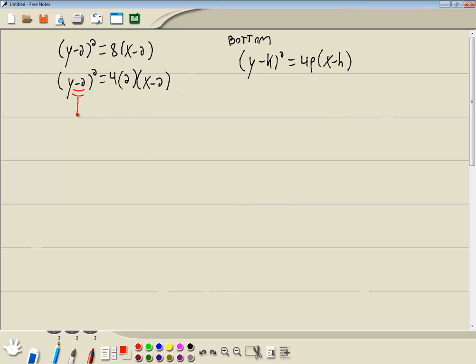Whatever numbers with our y is always our k, and it's always opposite sign. So this is a negative 2, so k will be a positive 2. Our h is whatever is with our x, and it's opposite sign. So this is negative 2, so h is positive 2. And this will be p, so p is 2. So I guess everything is 2. That's interesting.